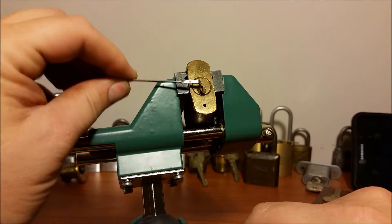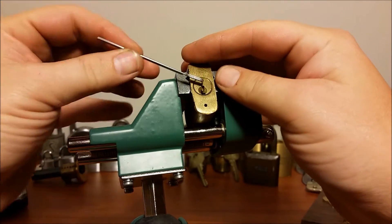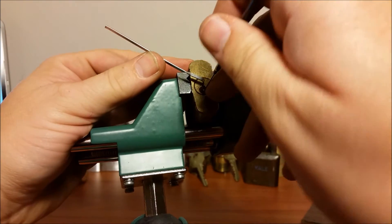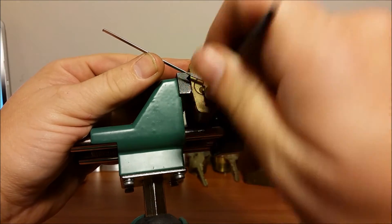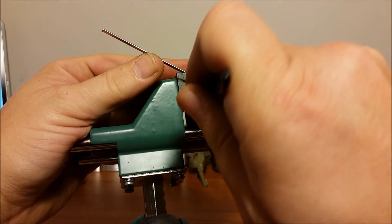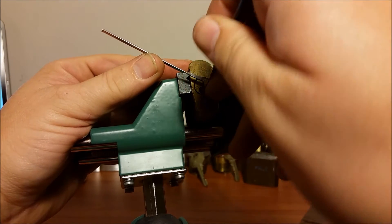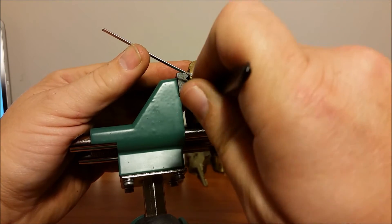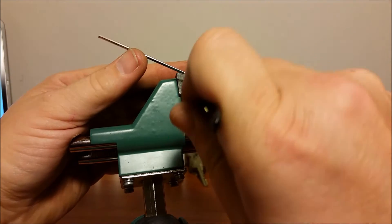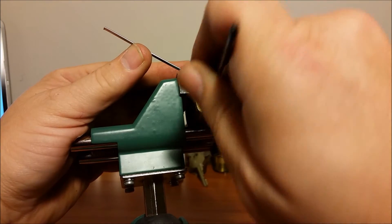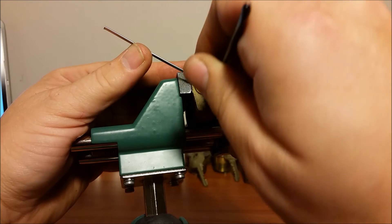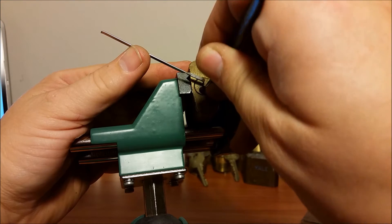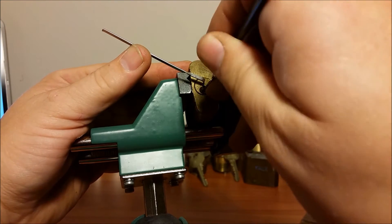Let's go top of the keyway since this is a Yale. All right, good medium tension. Click out of two. Click out of three. Click out of four.